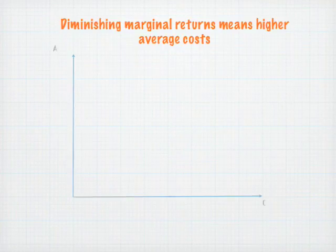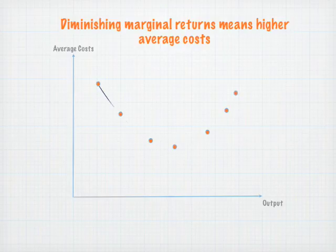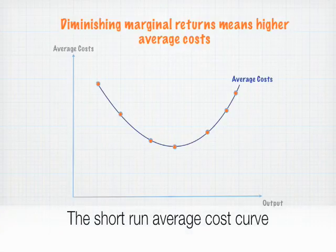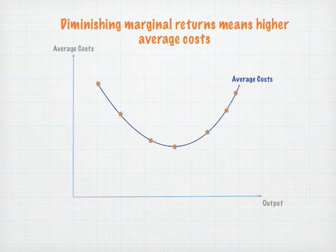This has some important implications for the theory of the firm. It suggests that by adding variable factors to fixed factors, average costs will initially fall, but as these variable factors become less efficient and diminishing returns set in, average costs will in fact start to rise. This explains the short-run average cost curve.